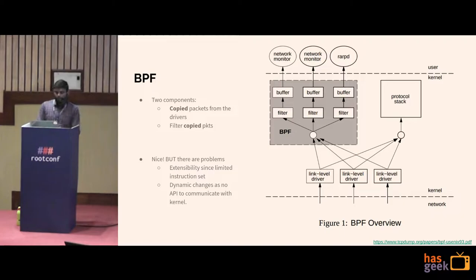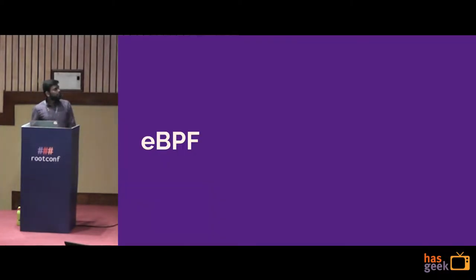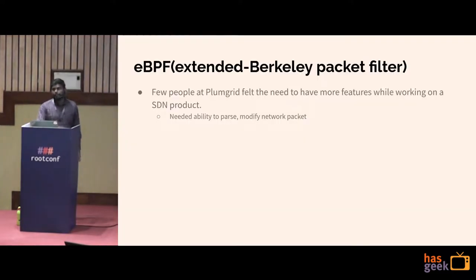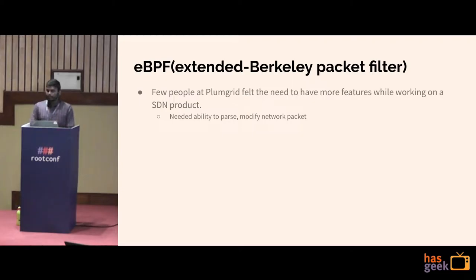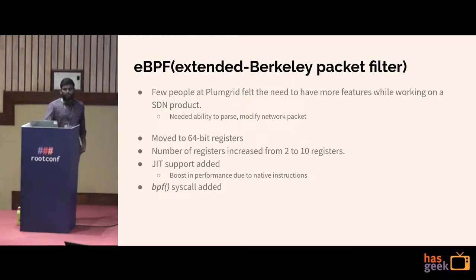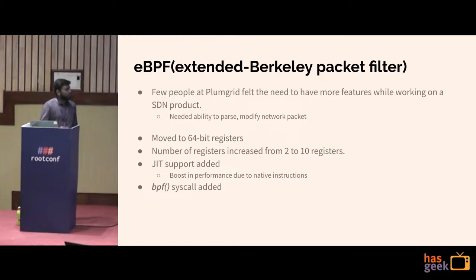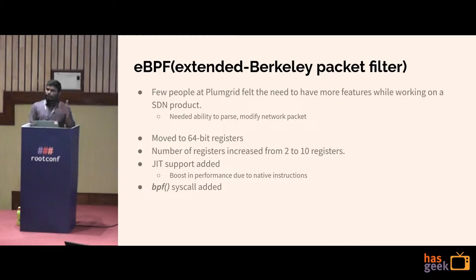With these problems, what was created was eBPF — Extended Berkeley Packet Filter. People at Plumgrid, working on an SDN product, enhanced BPF with new features. Since the original BPF paper was from 1992 — the era of 32-bit registers — they moved to 64-bit and added registers, totaling 10 registers. The goal was one-to-one mapping with the x86 instruction set.